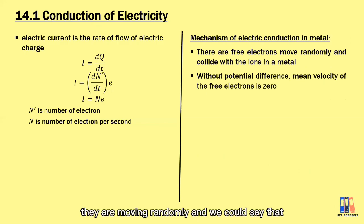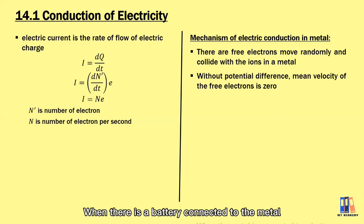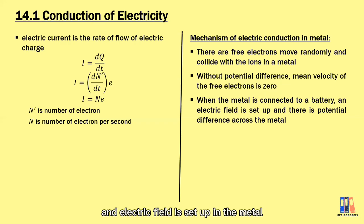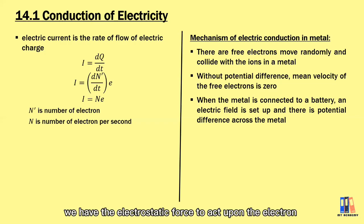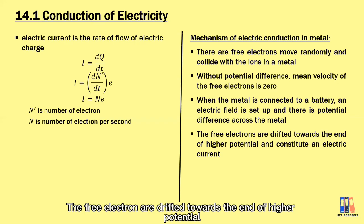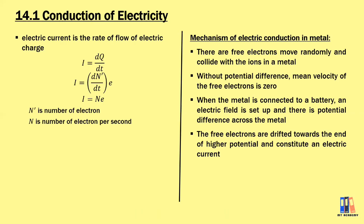The electrons are moving randomly and the mean velocity of the electrons is zero. When a battery is connected to the metal, there is a potential difference across the metal and an electric field is set up. With the electric field, an electrostatic force acts upon the electrons, pushing them towards the positive terminal. The electrons drift towards the higher potential end, and this constitutes the electric current.